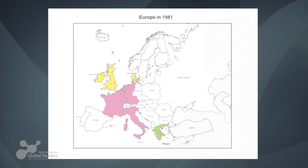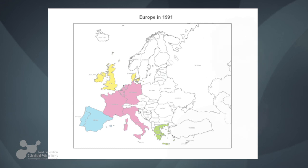Then we have the second southern enlargement in 1986 to include both Portugal and Spain. And then in 1991 we have German unification. German unification is not considered a traditional enlargement because there was no agreement on that. But nevertheless, the fact that the eastern part of Germany entered the European Union created a new equilibrium. The European Union was obliged to look more eastwards, and many countries were very concerned about the weight of Germany.